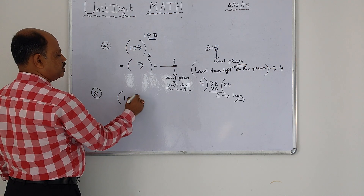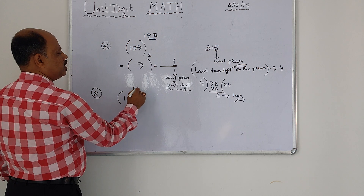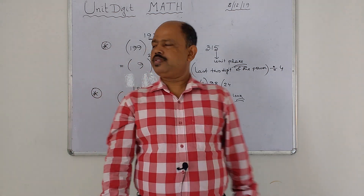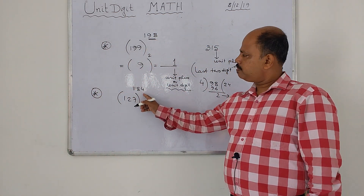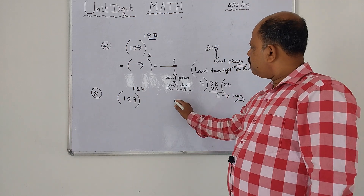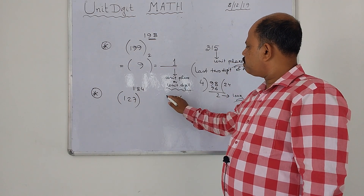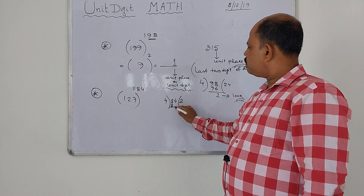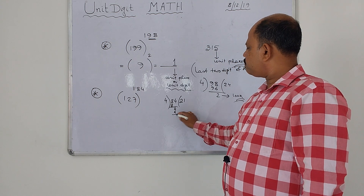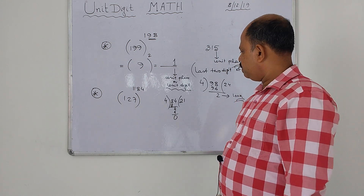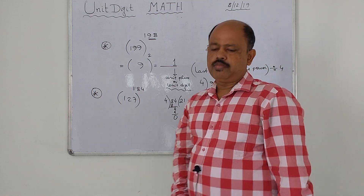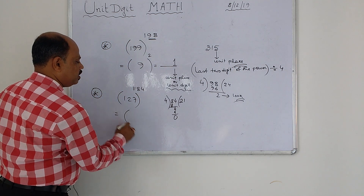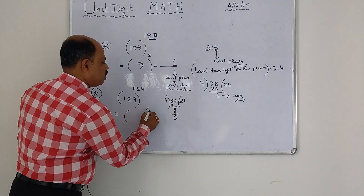If 17 is raised to the power 1184, then look — what are the last two digits of the power? It is eighty-four. Eighty-four divided by four: four times twenty-one is eighty-four, and there is no remainder. Reminder is zero.